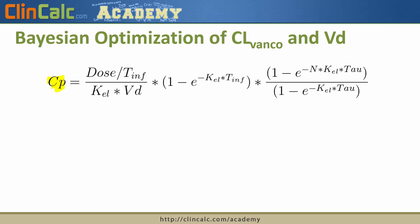For example, when we give a patient vancomycin, we know what dose we gave them, how long the infusion was, how many doses they've received, and how frequently we're giving that dose. In contrast, we don't know the patient's elimination constant or volume of distribution — and that's actually what we're trying to solve for. Bayesian modeling uses the observed serum concentration to figure out the most likely elimination constant and volume of distribution based on what we knew from that pharmacokinetic paper.